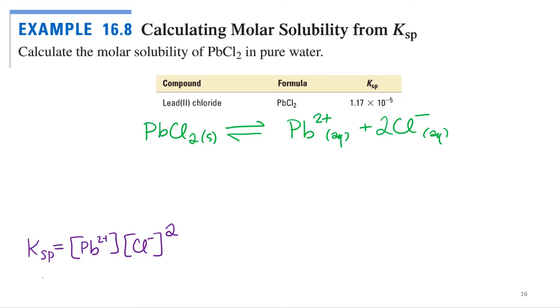Alright, so we know the Ksp, so I can use an ICE table to figure out the concentrations. And I'll just do that using an ICE table. Ice, ice, baby. What do we know about lead two chloride? It's a solid. So do we need to even worry about it? No, we don't even need to worry about it. It's like water in our acid base equilibria. It's not in the equilibrium expression, we don't have to worry about it.